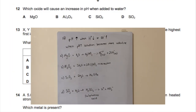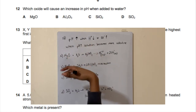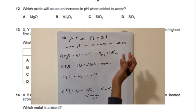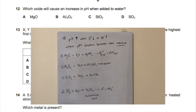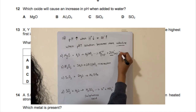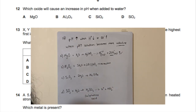For question 12, we need to find which oxide increases pH when added to water. pH increases when H⁺ ions decrease or OH⁻ ions increase, meaning the solution becomes more alkaline. When magnesium oxide is added to water, you get magnesium hydroxide — and when it dissociates, it releases OH⁻ ions, which is what we want.